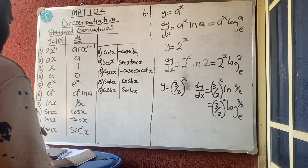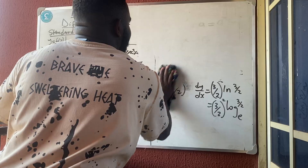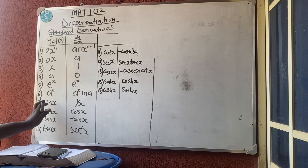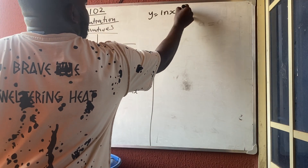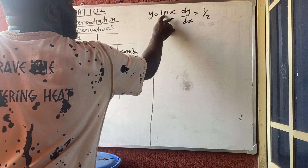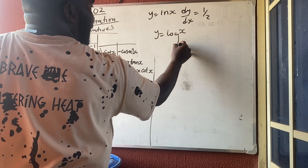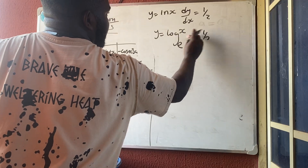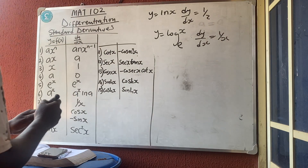Rule 7: the derivative of ln(x) is 1/x. So if y = ln(x), then dy/dx = 1/x. Note that log(x) with base e is the same as ln(x), so dy/dx is still 1/x.